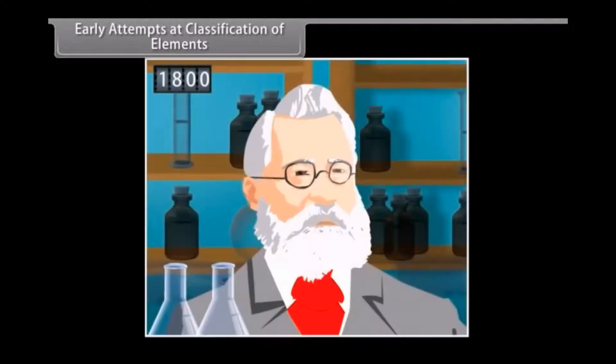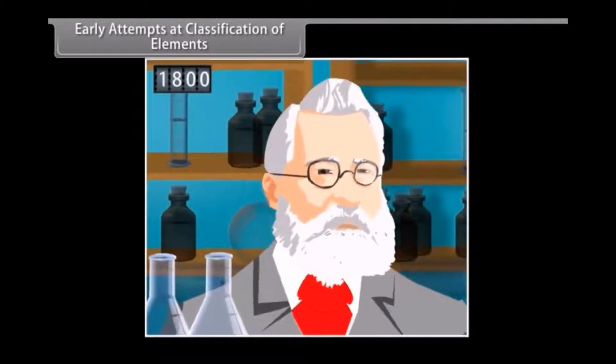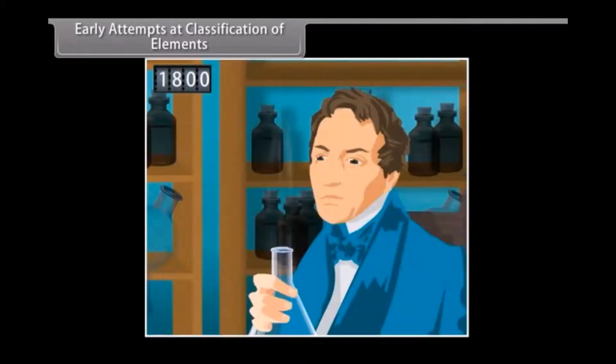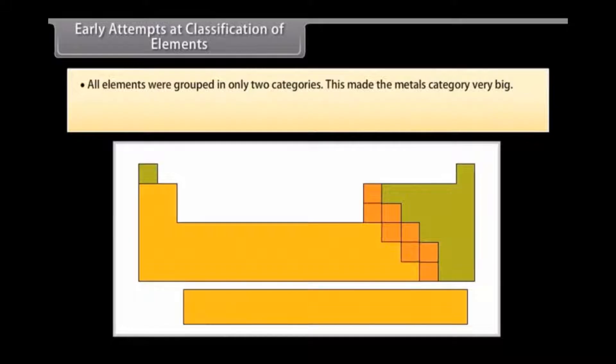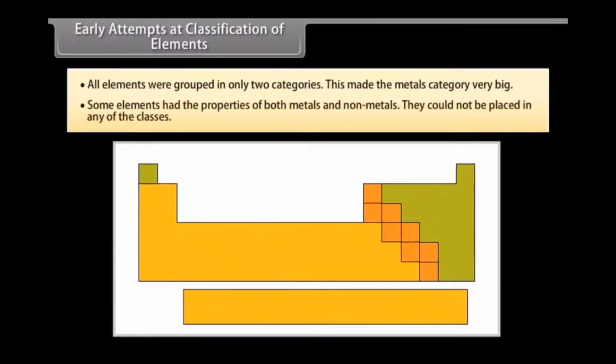Early attempts at classification of elements. In the early days, scientists classified elements purely on the basis of whether they were metals or non-metals. This had its own limitations. All elements were grouped in only two categories. This made the metals category very big. Some elements had the properties of both metals and non-metals. They could not be placed in any of the classes. This increased the need to identify some kind of pattern or regularity in the properties of the elements and then classify them.